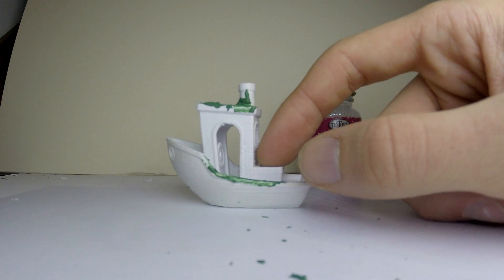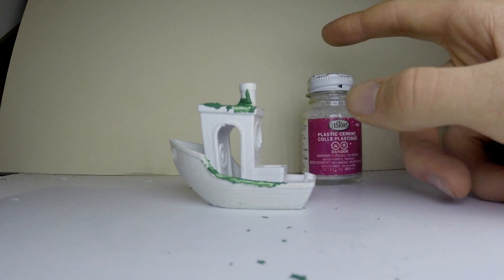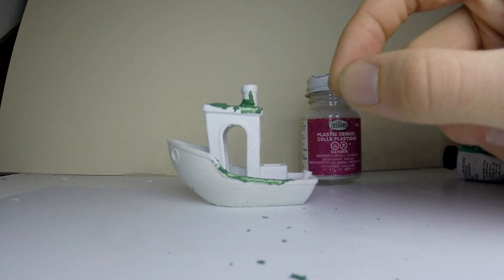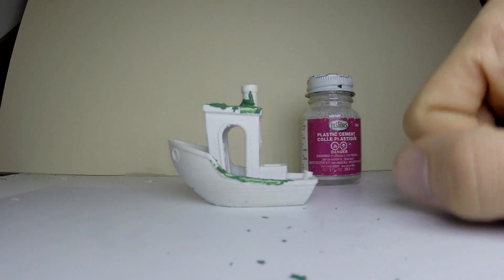Do be careful if you're working with an ABS or XT model, as the solvent will temporarily soften the outside layers, but I find that actually helps improve the adhesion of the putty to the model.